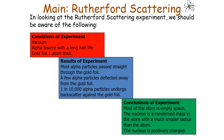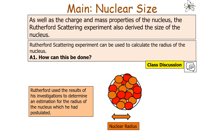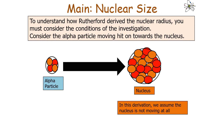Looking at the Rutherford Scattering experiment, we should be aware of: firstly, the conditions of the experiment; secondly, the results of the experiment; and thirdly, the conclusions of the experiment. Rutherford had worked out the density of the nucleus and the charge of the nucleus, and had also estimated the radius of the nucleus. So how can we use the Rutherford Scattering experiment to calculate the radius of the nucleus?